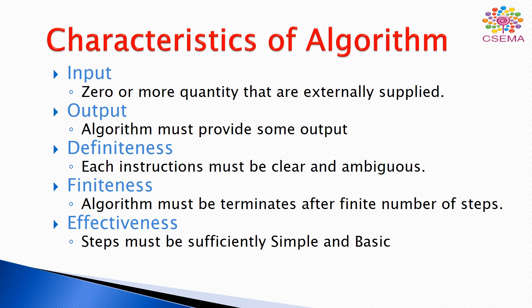The third characteristic is definiteness. Definiteness means the instructions must be clear and unambiguous. The defined instructions or the set of instructions that we define to create an algorithm must be clear and easy to understand.